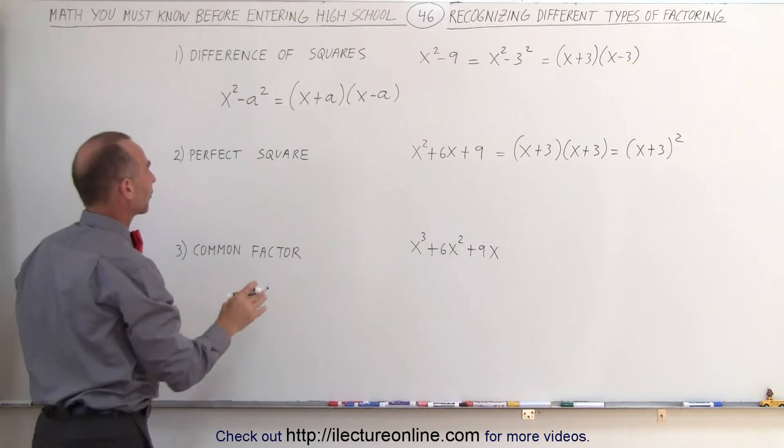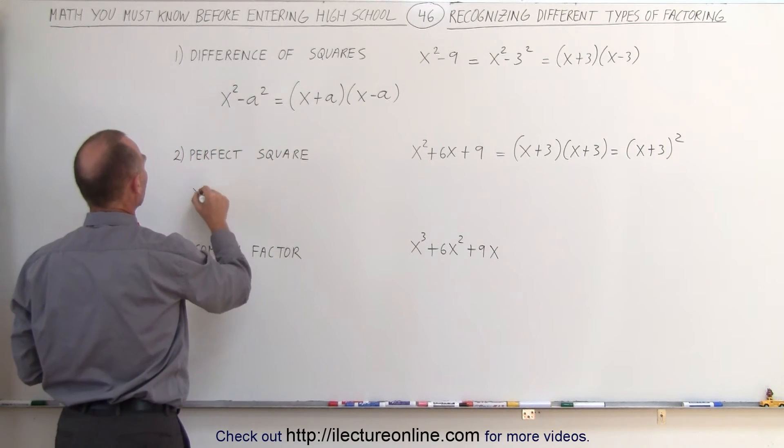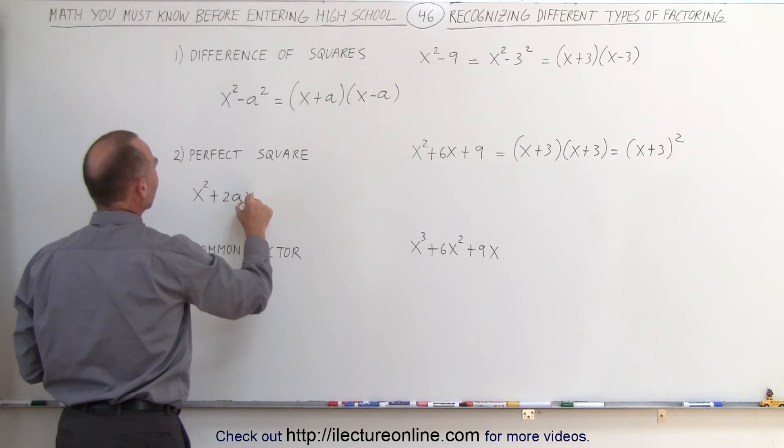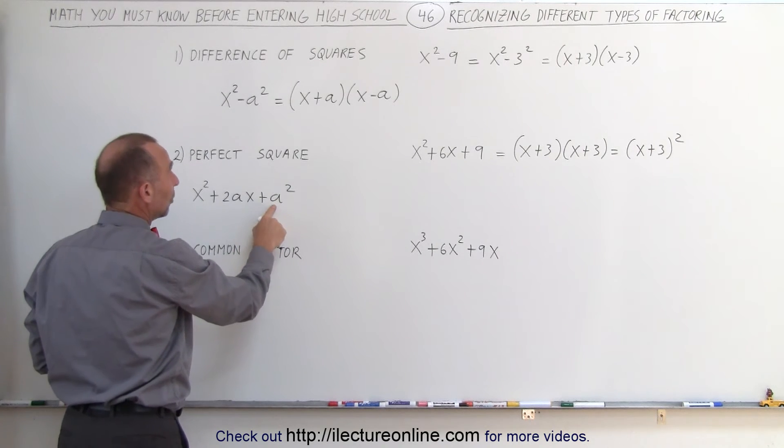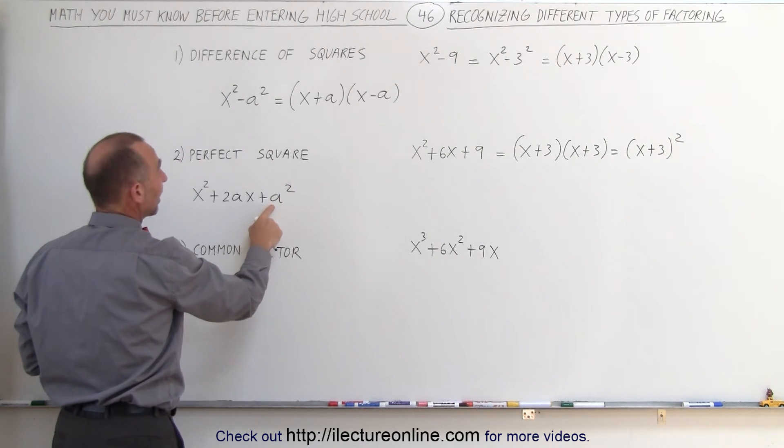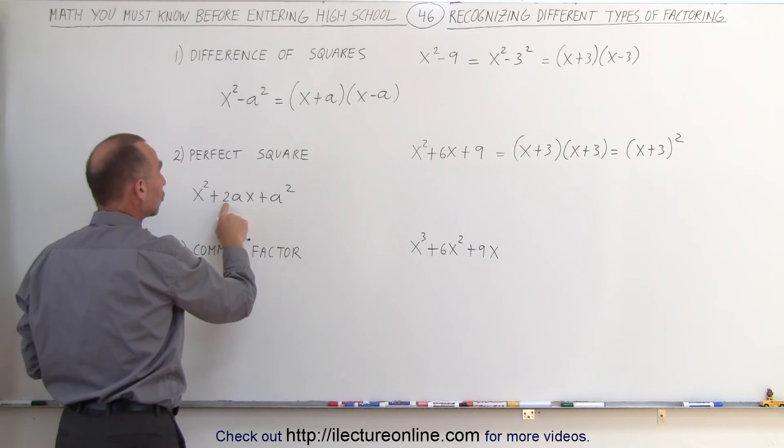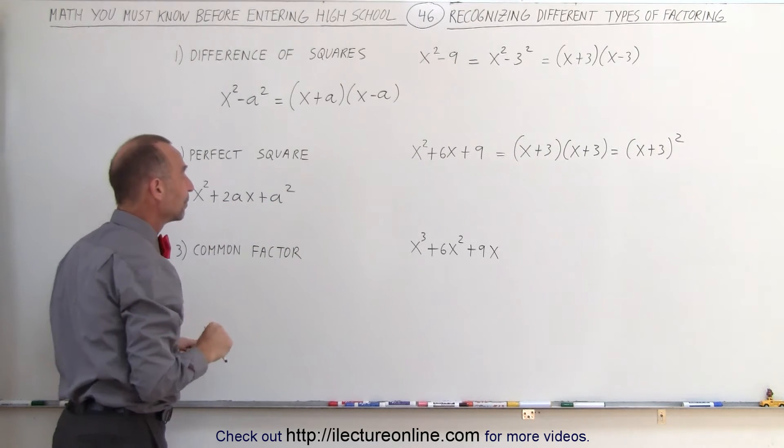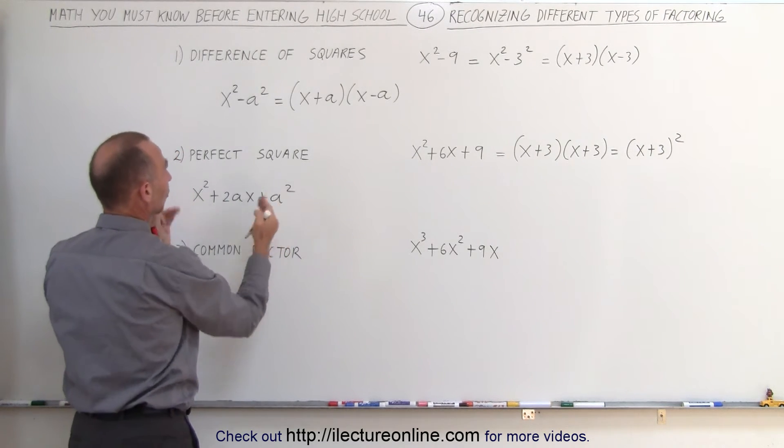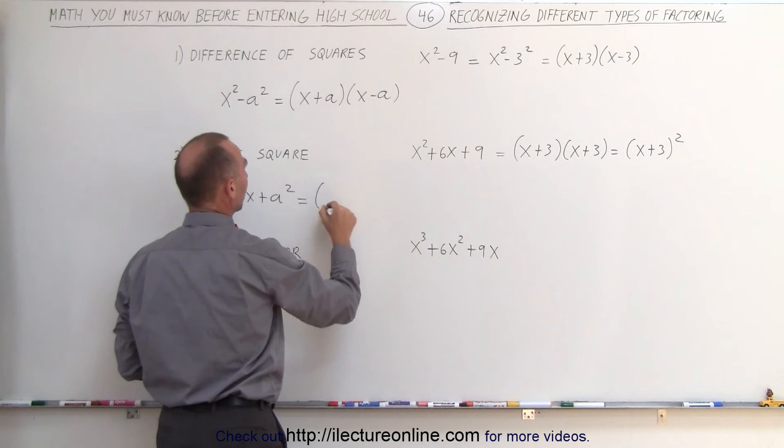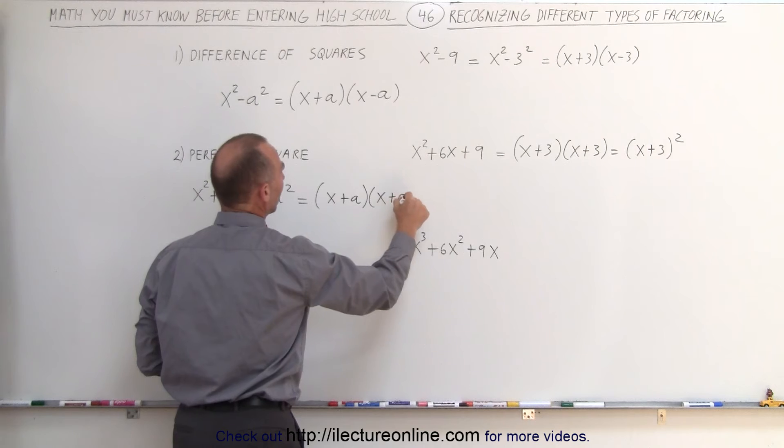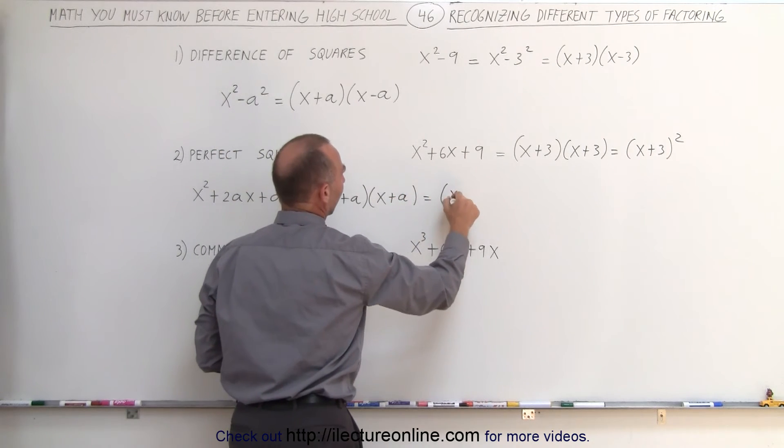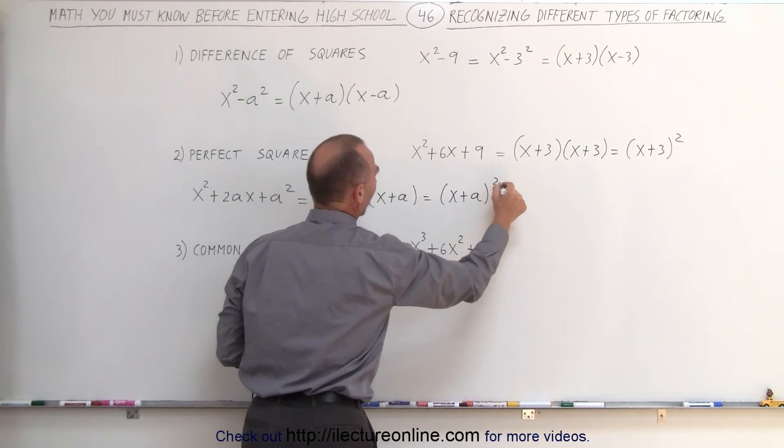Again, the general form of a perfect square is as follows. It is x squared plus 2ax plus a squared. Notice, a can be any number, like the number 3. And if you then take the number 3 times 2, you get twice the number 3 or 2a. In other words, if you get something in this format, when you factor, you can write it as x plus a times x plus a, or simply x plus a quantity squared.